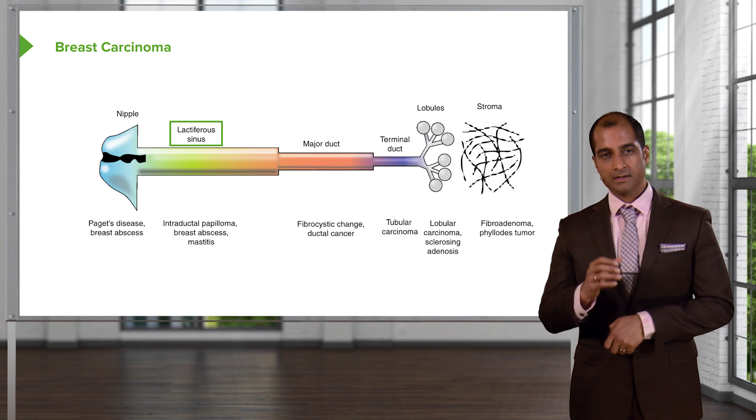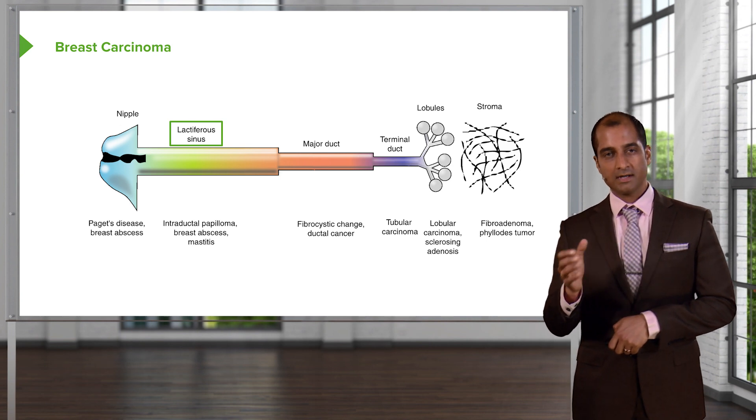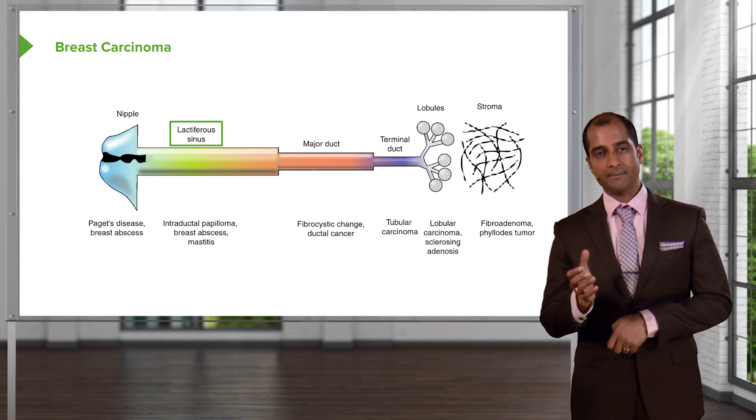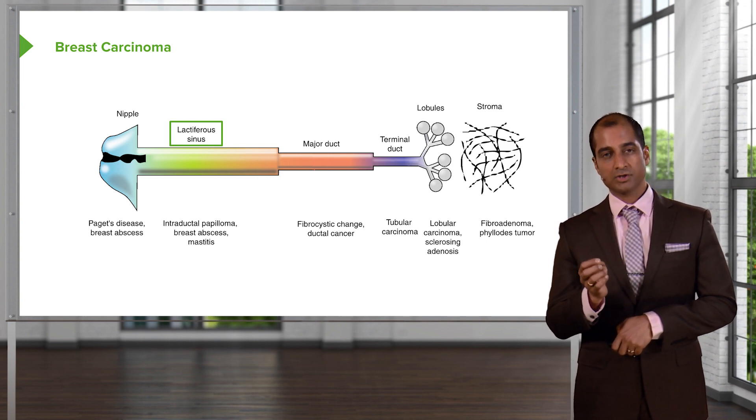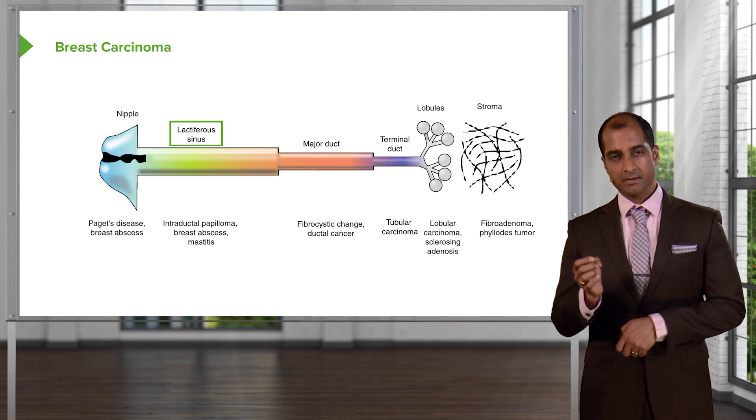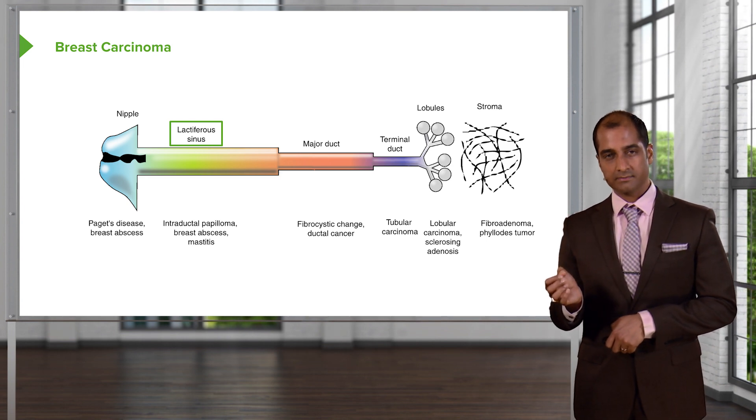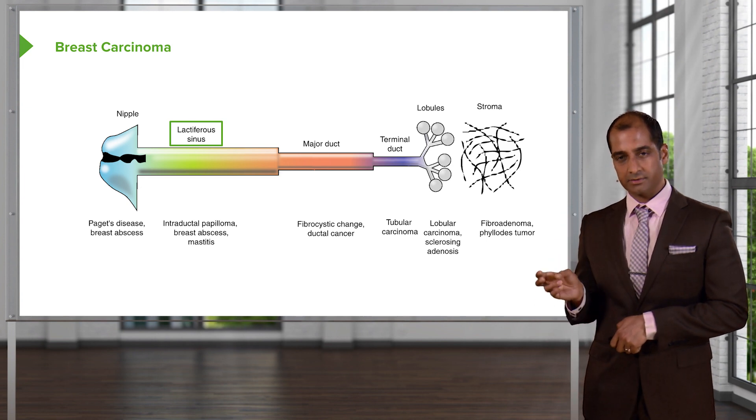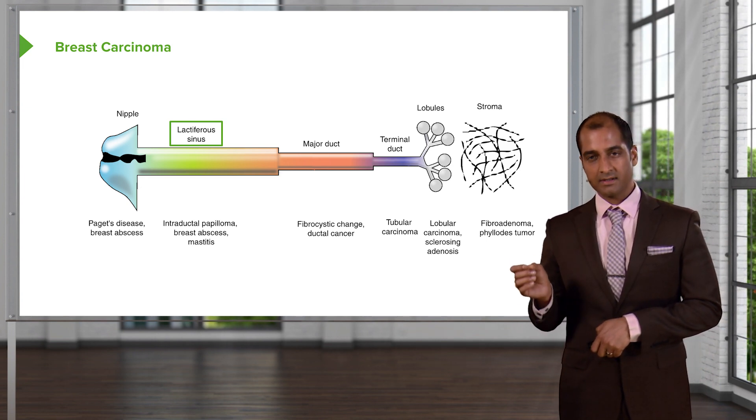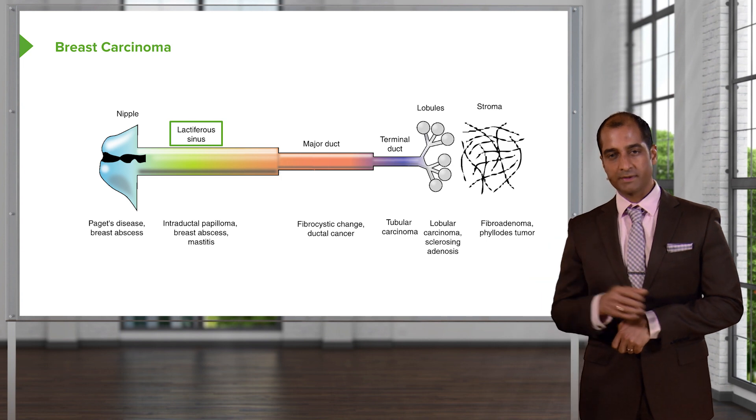Phyllodes tumor: age range? Elderly, postmenopausal, commonly six decades. Tell me the size of the tumor, small or large? Large. What about its increased risk of cancer? Much greater than fibroadenoma. I asked you kindly to make sure that you're comparing and contrasting phyllodes and fibroadenoma. I've just given you brief little points.